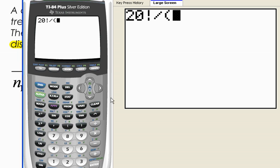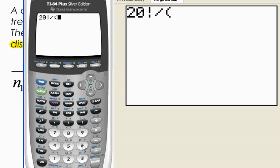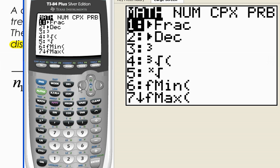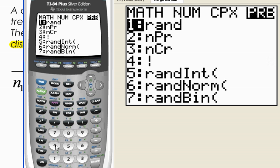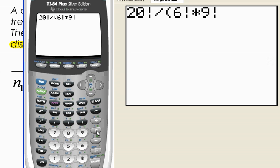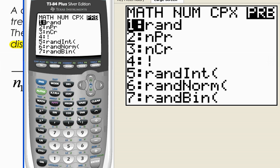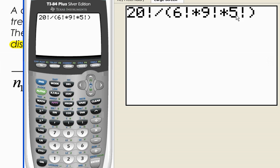Let's bring our calculator back up. Let's put the denominator in parentheses. Here we go, 6, math, probability number 4, 6 factorial, times 9 factorial, math, probability number 4 gives us our factorial, times 5 factorial. Close my parentheses. And when I hit enter, there we go.